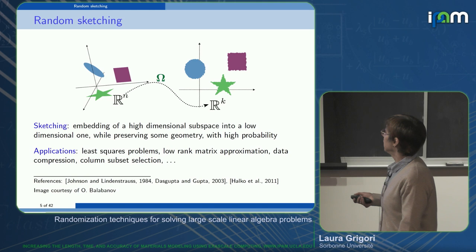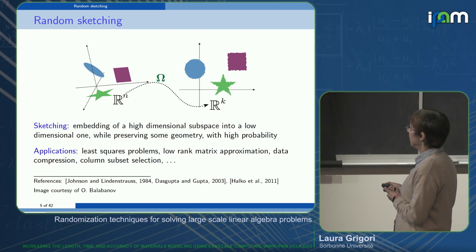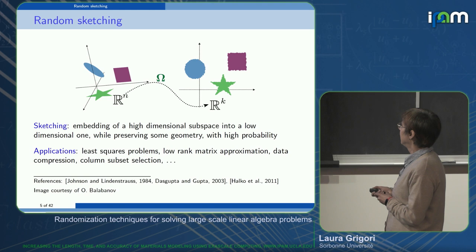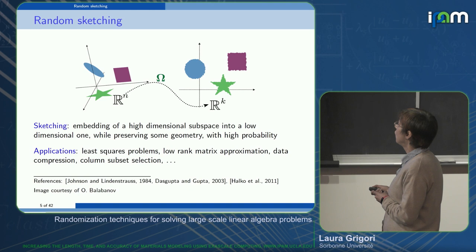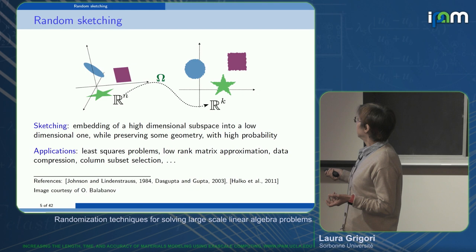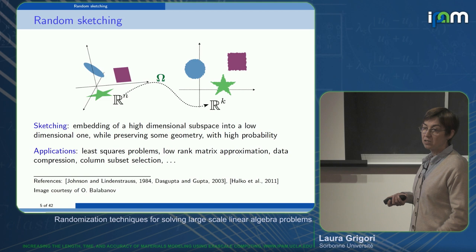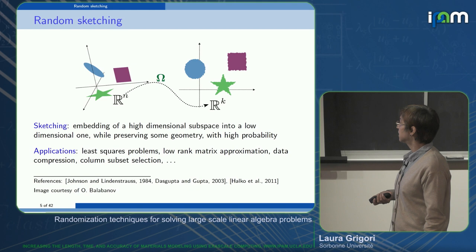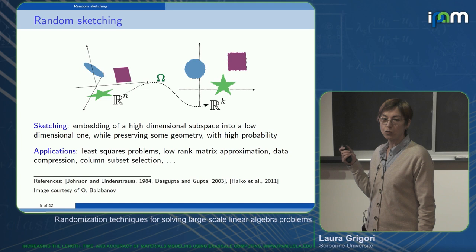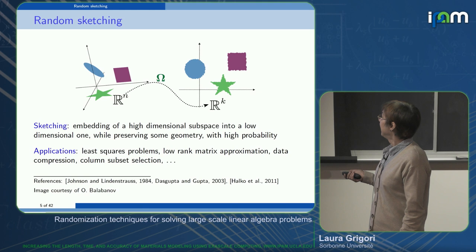Random sketching is a technique that embeds a high-dimensional subspace in R^n into a low-dimensional one in R^k, where k is much smaller than n, while some geometry is preserved with high probability. It has received a lot of attention in the last 15 years and is well developed for least-squares problems and computing low-rank approximations — randomized SVD is now widely used for data compression, column subset selection — but was largely overlooked for Krylov subspace methods. That's the focus of today's talk.